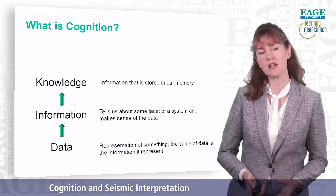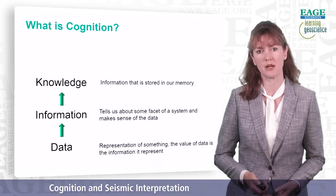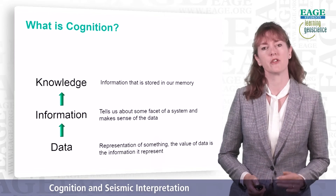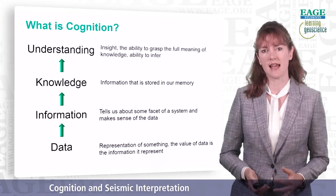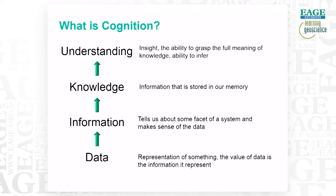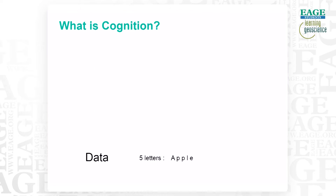Knowledge is simply the information that we have stored in our memory. But understanding is at a higher level still, because understanding is the ability to have insight, the ability to grasp the full meaning of knowledge, and the ability to infer other things from that knowledge. So it's possible to have knowledge without having understanding, and cognition is the way that we transfer from data into understanding.